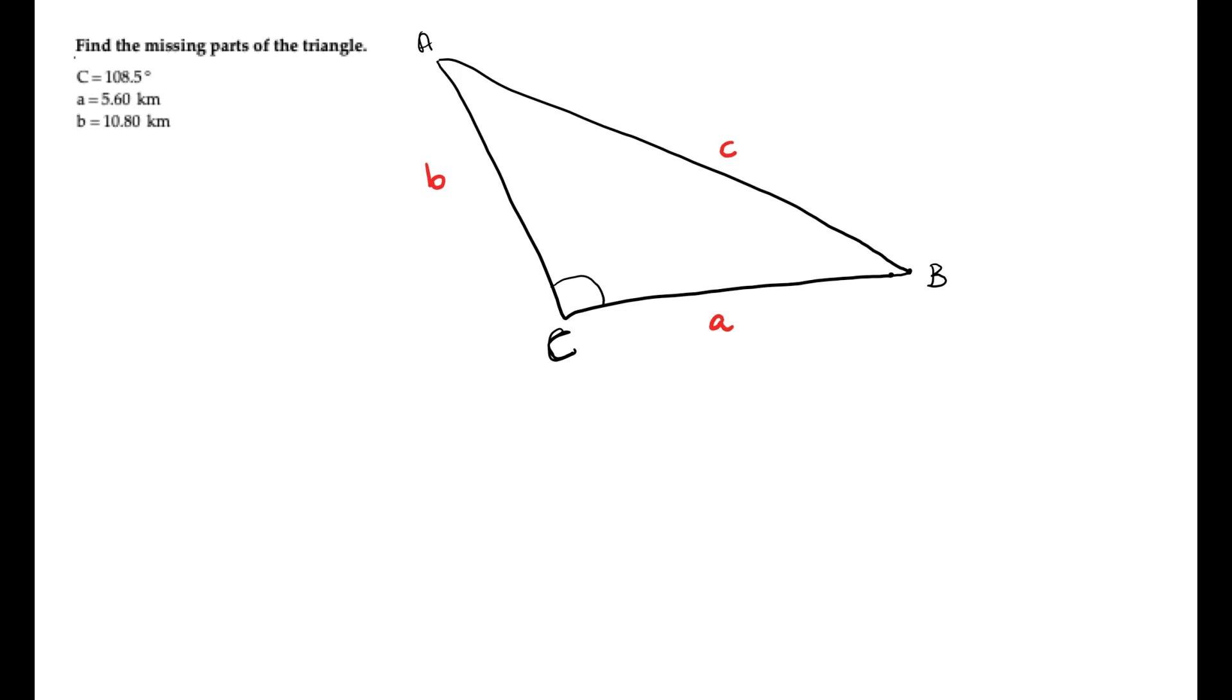Now we're going to label what it is that they gave us. So this is 108.5 degrees. And then side A is going to be 5.6 kilometers, and side B is going to be 10.8 kilometers.